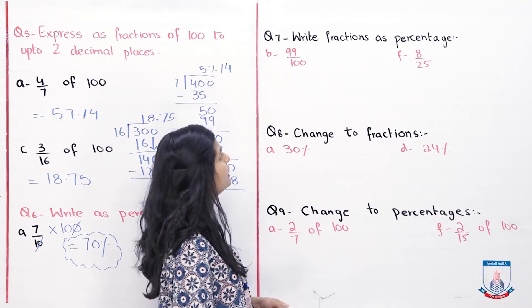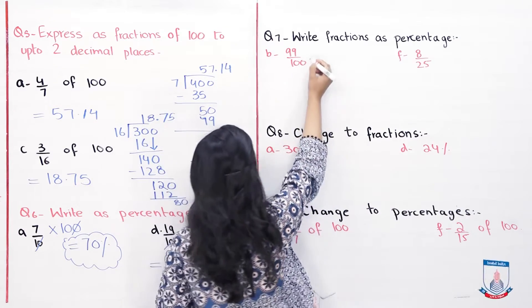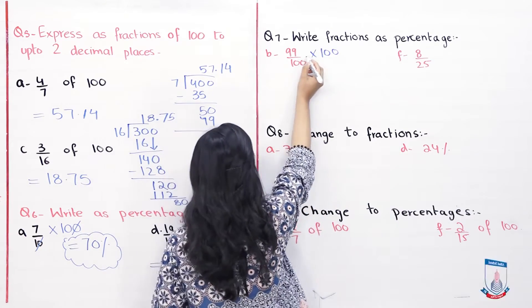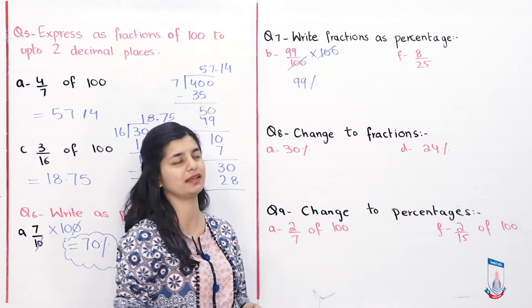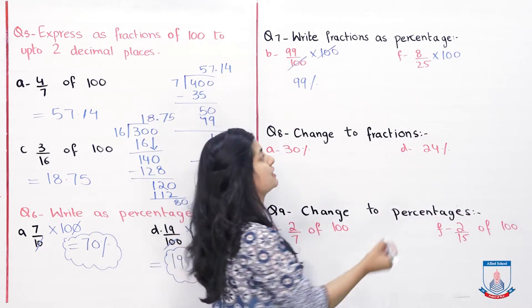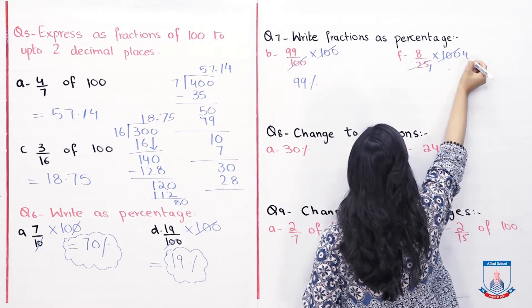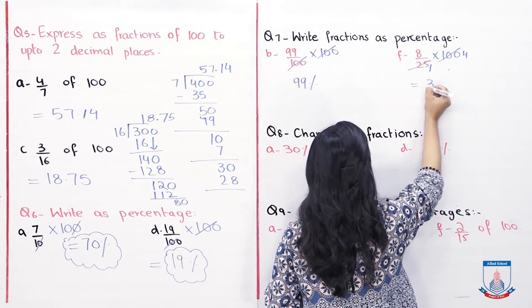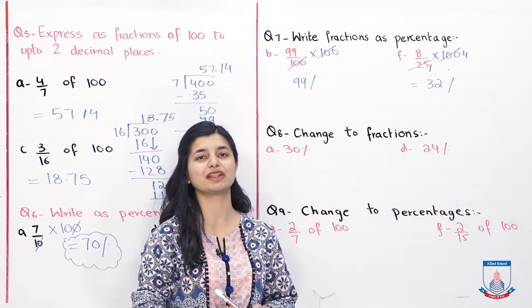The next question is question number 7. Write fractions as percentage. Ta kreeban wahi karna hai jo humane pichle question mein kiya hai. You only have to multiply by 100. Toh agar hum part B ko dekhae, again multiplied by 100. Ab hame pata hai kya hum per hum cancel out kar sakte hain, 100 ko 25 ke saath. Dono 25 se divide hoon gae. Yahan one ae ga, yahan four ae ga. Because 100 divided by 25 is 4. 8 into 4 reh gya hai, that is 32 percent. Toh ye aapka answer ho jae ga.